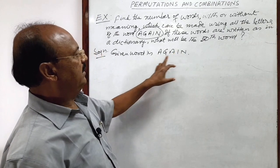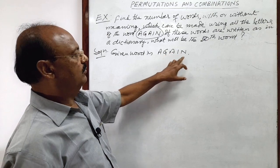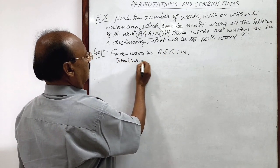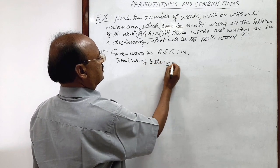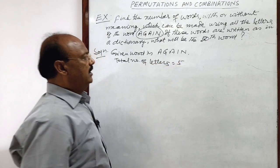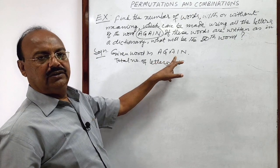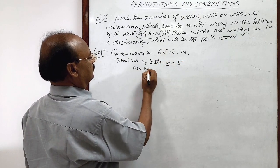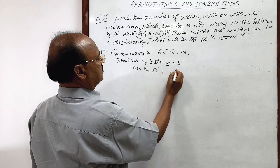Here total number of letters is 1, 2, 3, 4, 5. Total number of letters is equal to 5 and there is a repetition of A twice.